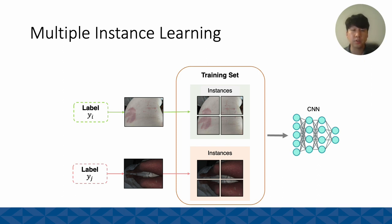Multiple instance learning has been used for image quality assessment in previous studies, where authors have attempted to assess the quality of an image by dividing the image into small patches, as shown in the figure, and aggregating the performance metrics from those regions.